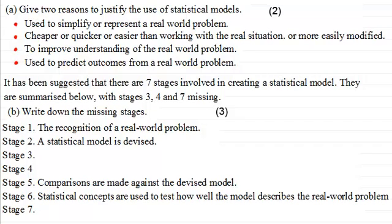Now in part B we're told that it has been suggested that there are seven stages involved in creating a statistical model and they are summarized below with stages three, four and seven missing. And what we've got to do is write down the missing stages. I'll give you a moment just to pause the video.